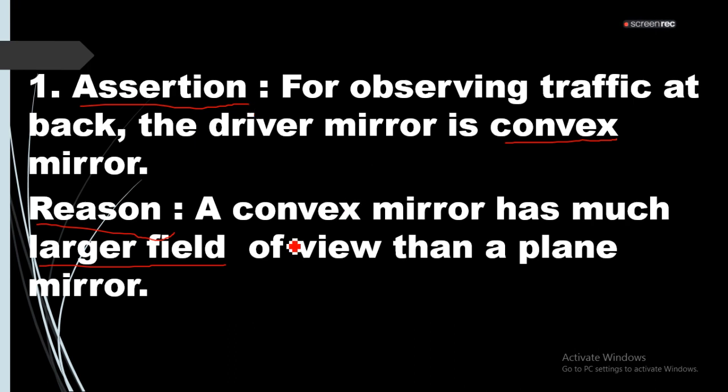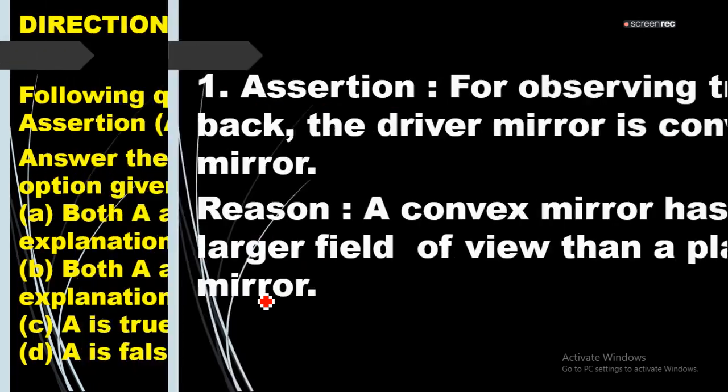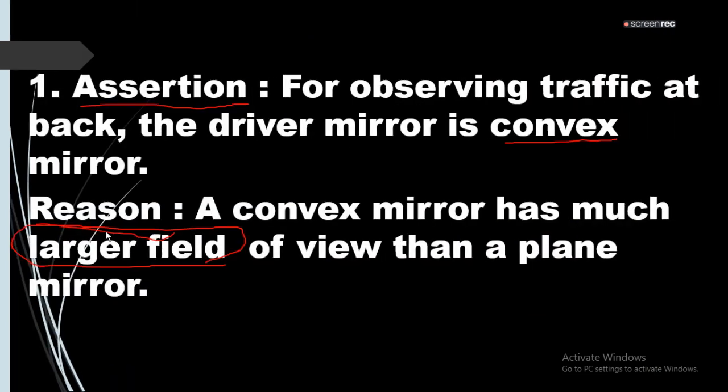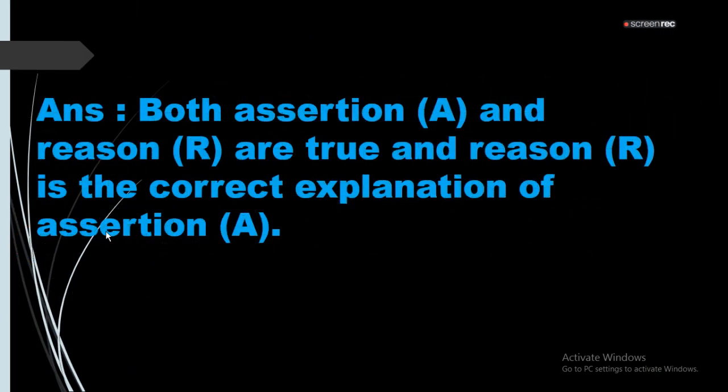So which can we choose, A, B, or C? We are aware that from A, B, or C, we can choose A here. Because A is true, R is true, and R is the correct explanation. So you can see here, the answer is both assertion and reason are true and R is the correct explanation of assertion.